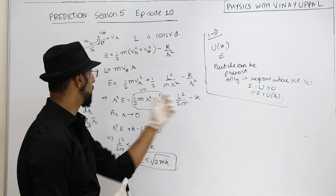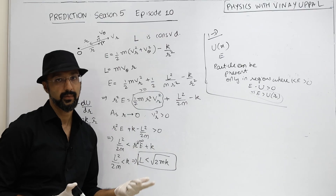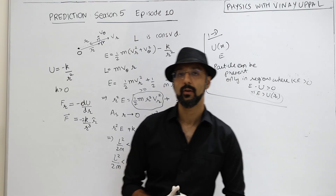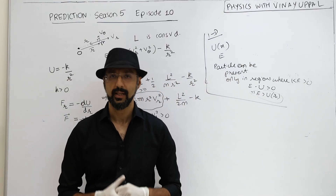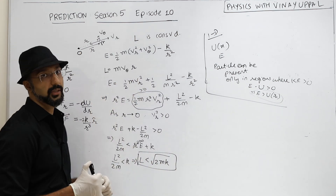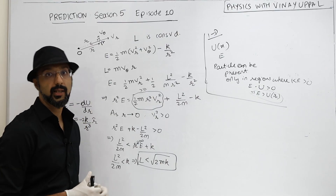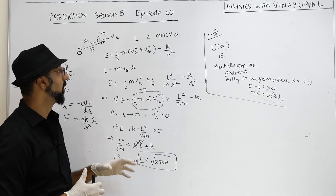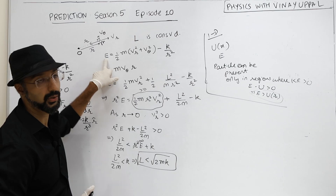One thing to note is that angular momentum is a finite quantity. As r tends to 0, vθ will tend to infinity. That is completely fine, because as you approach the origin, the potential energy tends to negative infinity. The total energy is constant, so kinetic energy tends to positive infinity, and the sum remains constant — total energy is conserved.